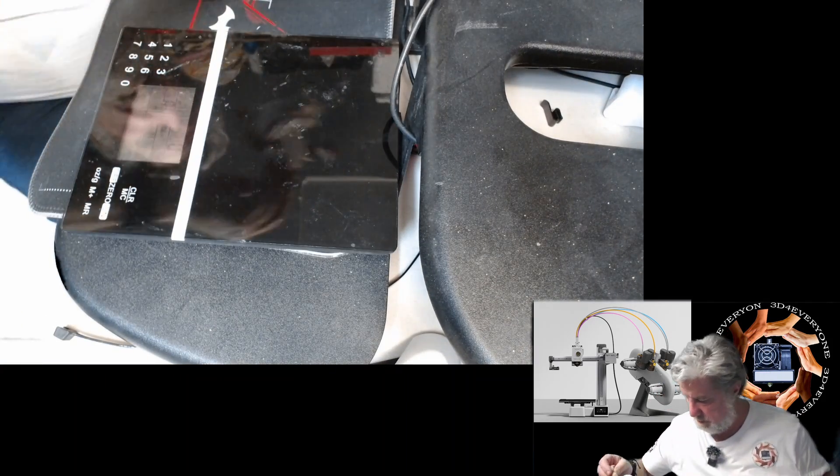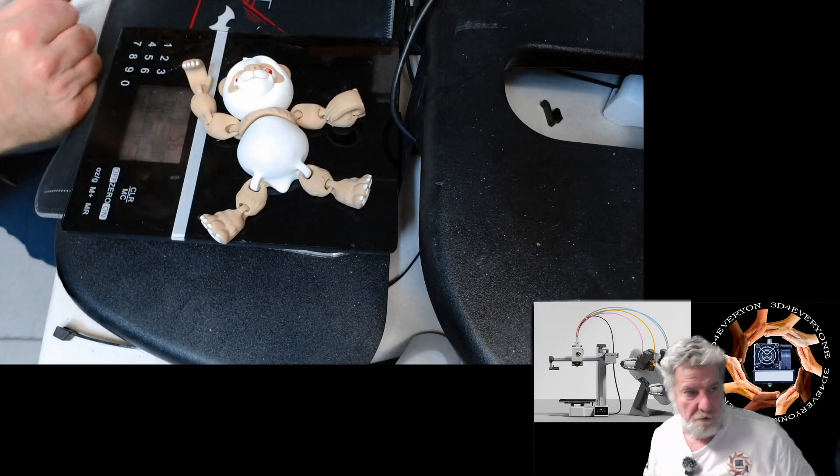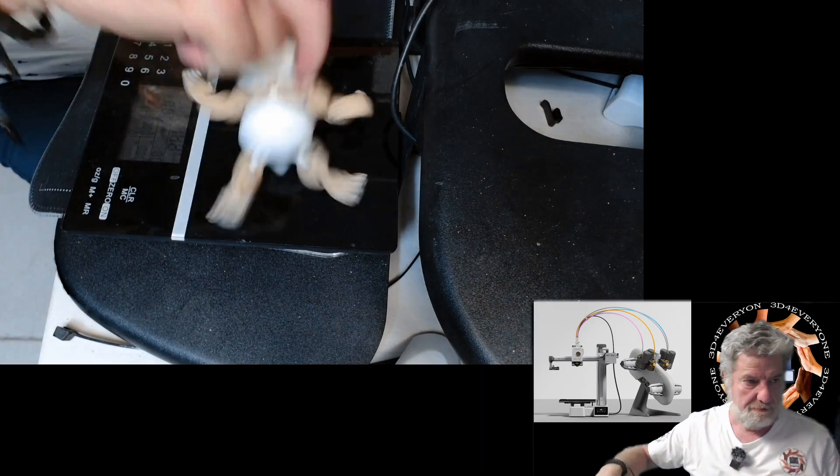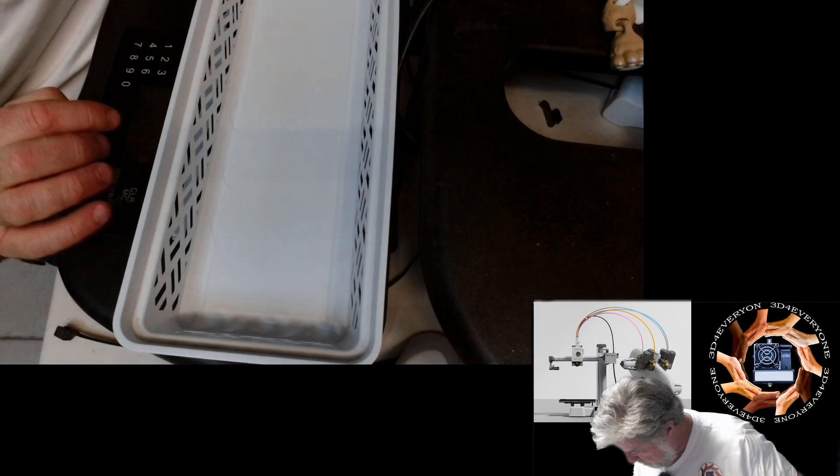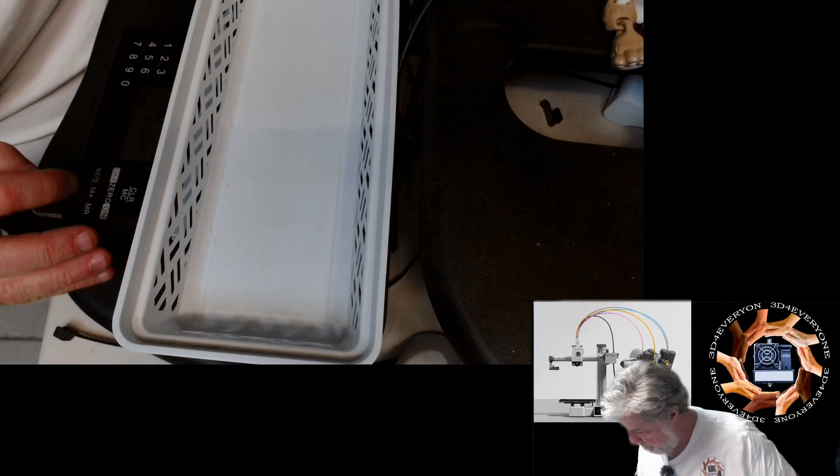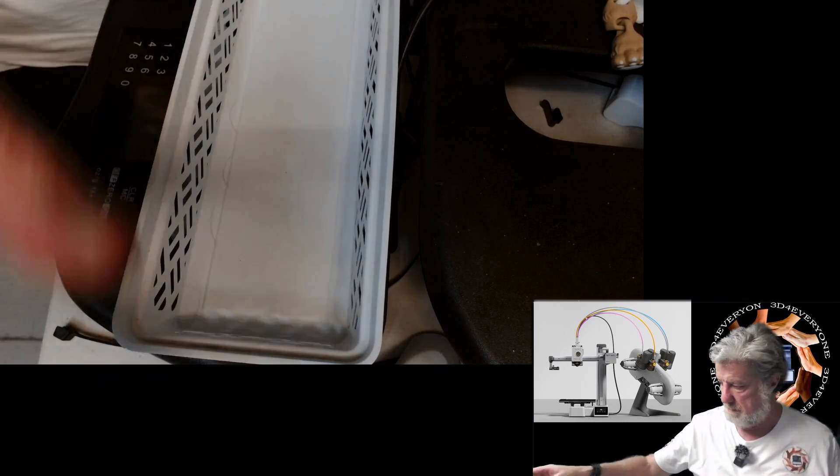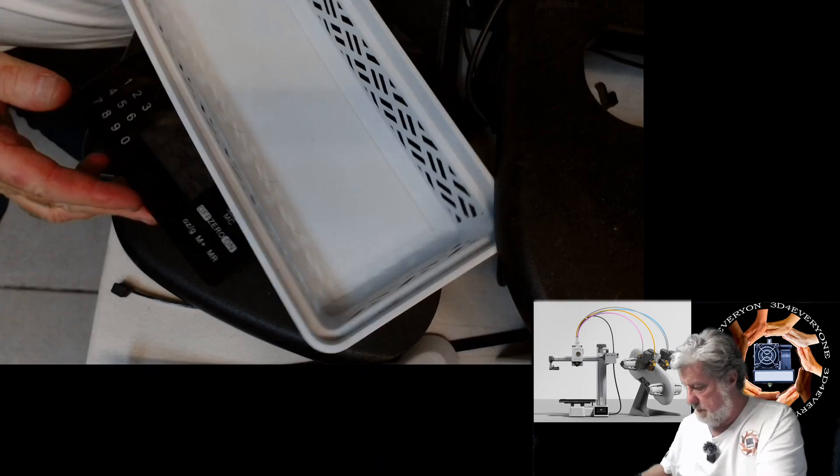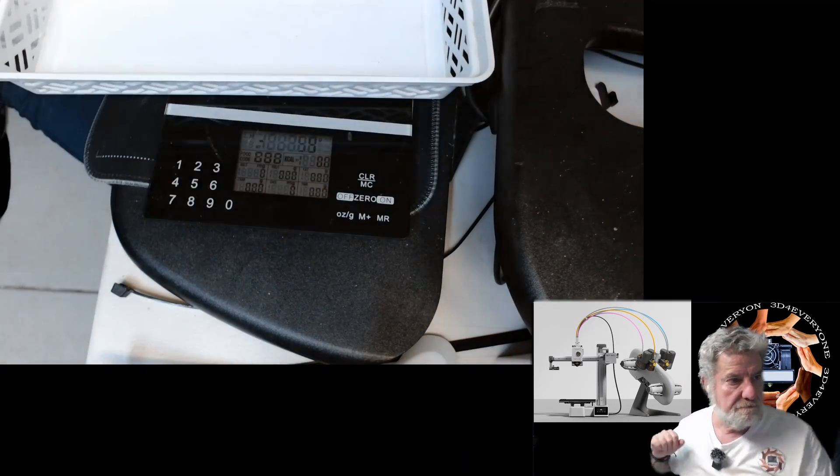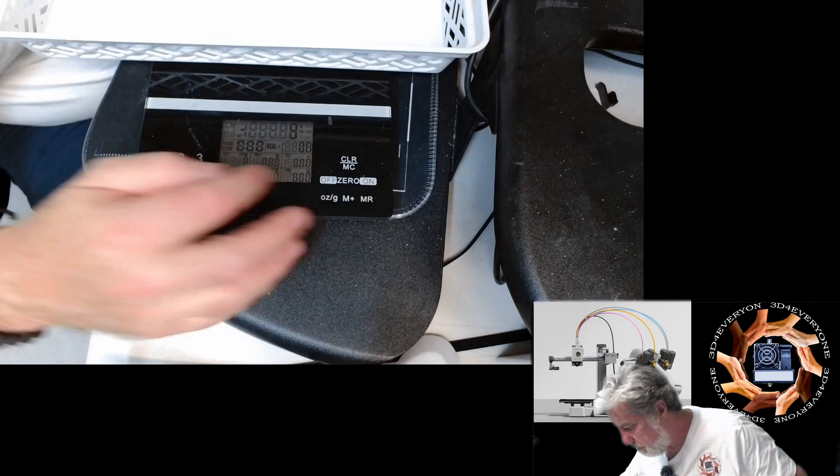Here's my little scales. Let's have a weight of the little. That weighs 54 grams in total. So I'll just put a little tray on there and I will zero it.